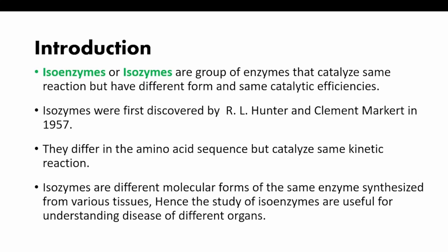What are isoenzymes? Isoenzymes or isozymes are a group of enzymes that catalyze the same reaction but have different forms, with the same catalytic efficiency. Isoenzymes were first discovered by R.L. Hunter and Clement Market in 1957. They differ in amino acid sequence but catalyze the same kinetic reaction.